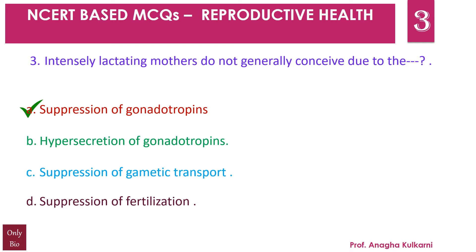The presence of prolactin hormone in the blood of lactating mothers suppresses the release of gonadotropins — namely FSH and LH — from the pituitary. Gonadotropins FSH and LH are required for ovulation to occur. In their absence, the ovum is not released, and hence chances of fertilization are nil up to 6 months following parturition if the mother is regularly breastfeeding. Thus, intensely lactating mothers do not generally conceive.